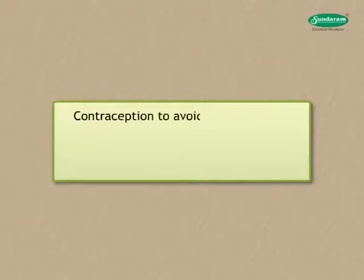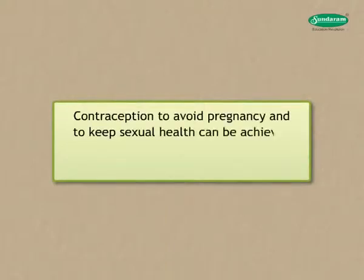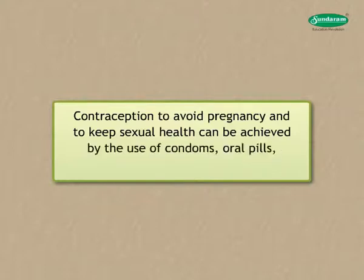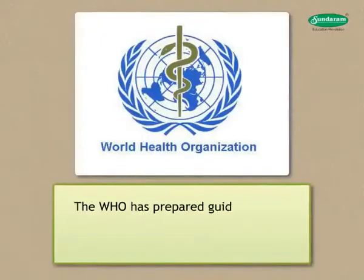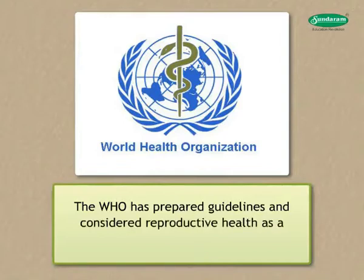Contraception to avoid pregnancy and to maintain sexual health can be achieved through the use of condoms, oral pills, copper IUDs, and some other methods. The WHO has prepared guidelines and considers reproductive health as a fundamental human right.